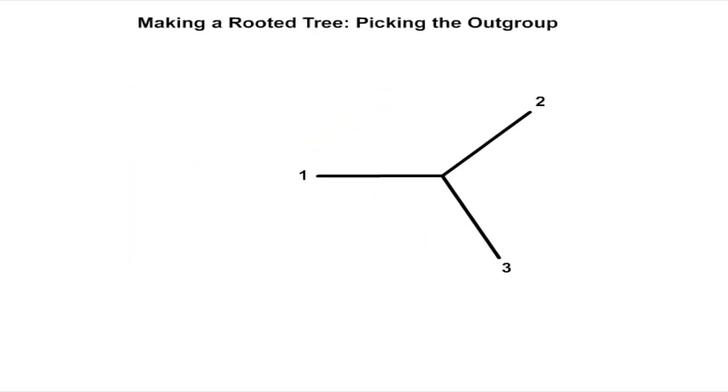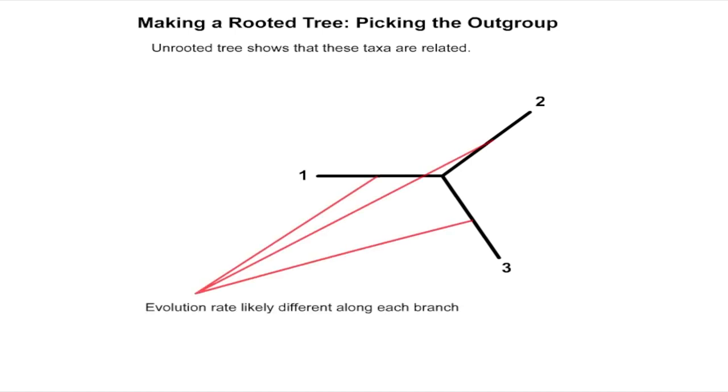An unrooted tree is radial and does not look much like a tree in the literal sense. This is deliberate to avoid implying that we know where the root lies. Yet obviously any set of taxa has to have some common ancestor. The problem is locating where on the tree we should place the node that represents that ancestor, or the root.